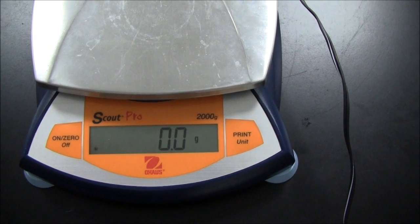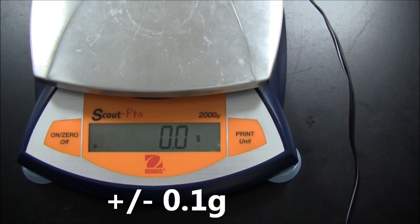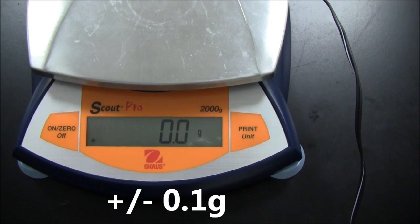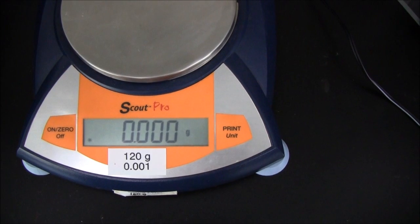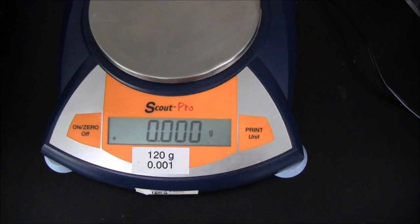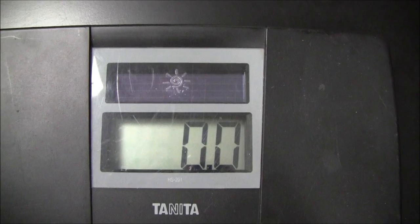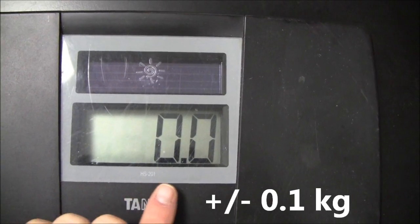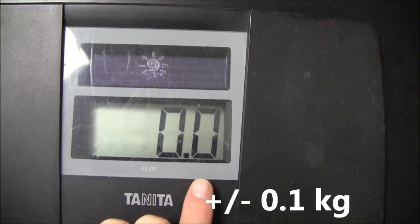This digital balance has a smallest reading possible of 0.1 grams, so the uncertainty is plus or minus 0.1 grams. This has an uncertainty of plus or minus 0.001 grams. This digital balance in kilograms can measure 0.1 kilograms as the smallest amount, so that's the uncertainty.